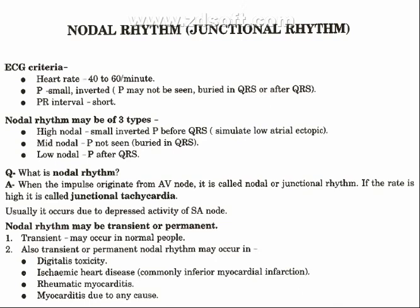Nodal rhythm may be transient or permanent. Transient may occur in normal people. Transient or permanent nodal rhythm may also occur in digitalis toxicity, ischemic heart disease — commonly inferior myocardial infarction — rheumatic myocarditis, and myocarditis due to any cause.